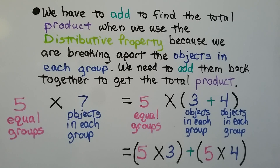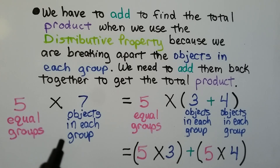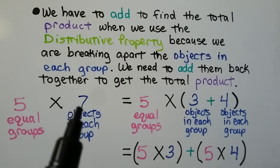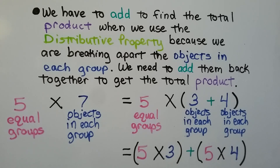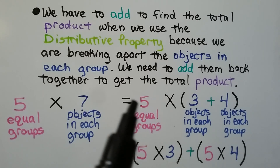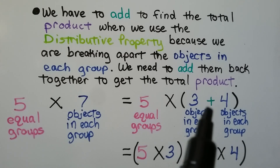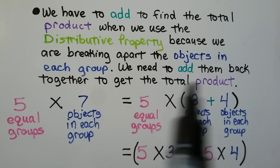We have to add to find the total product when we use the distributive property because we are breaking apart the objects in each group — we need to add them back together to get the total product. For 5 times 7, that's 5 equal groups. We can split the 7 objects into 3 objects in each group and 4 objects in each group, then multiply by the 5 equal groups. We have 5 times 3 plus 5 times 4.